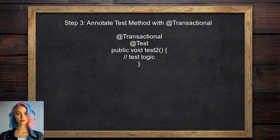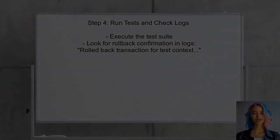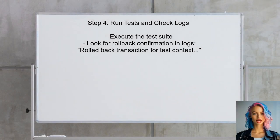Additionally, the user should check if the test method in the nested class is annotated with @Transactional. This ensures that the method runs within a transactional context, allowing rollback to occur. Finally, the user should run the tests again to confirm that the rollback is now functioning as expected in the nested test class.